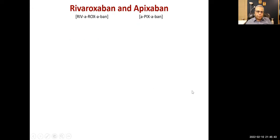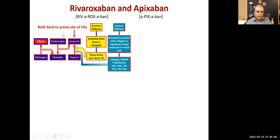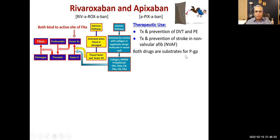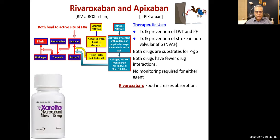Rivaroxaban and apixaban are direct oral anticoagulants that bind to the active site of factor Xa. Therapeutic uses: treatment and prevention of DVT, prevention of stroke in non-valvular atrial fibrillation. Both drugs are substrates for P-glycoprotein, have fewer drug interactions, and no monitoring is required. For rivaroxaban, food increases its absorption — important pharmacokinetic point. Metabolism involves CYP3A4, so inducers and inhibitors of CYP3A4 (e.g., rifampicin as inducer, cimetidine as inhibitor) will affect drug levels.